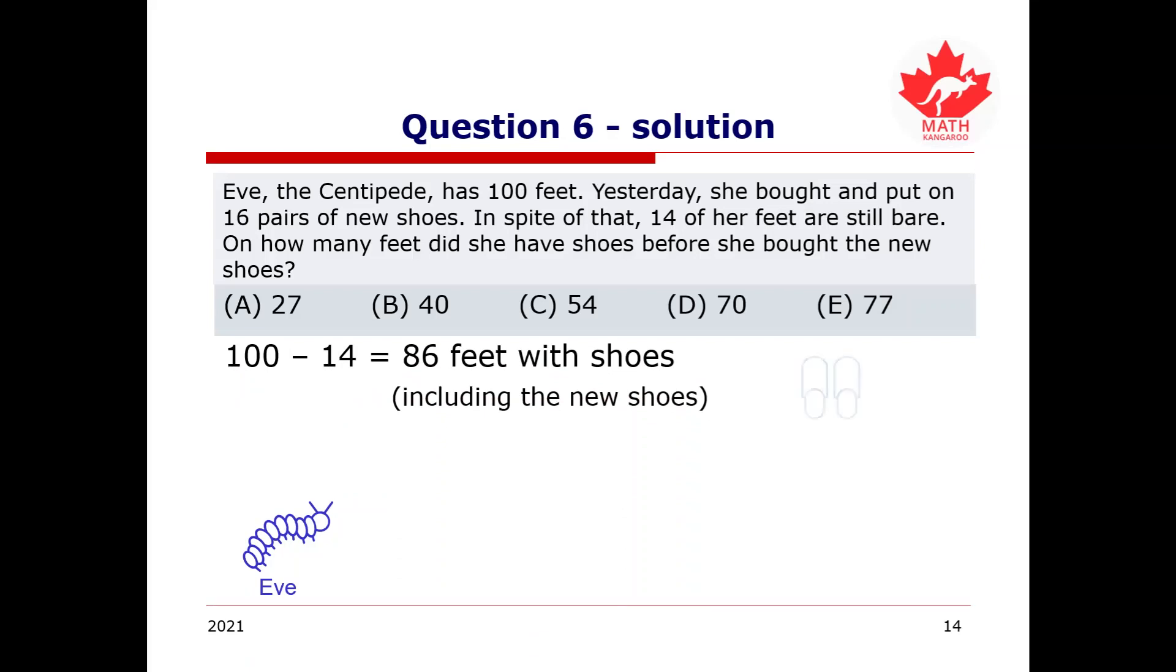And since one pair of shoes is for two feet, and two pairs of shoes are for four feet, we can then go 16 pairs of shoes must be 16 plus 16, giving us 32 feet. This means that Eve would have just put on 32 of her feet with some new shoes. Now, since we know that the total number of feet with shoes on is 86, and the number of new shoes, 32, Eve just put on, finding the difference between these two will give us the number of feet with shoes on before Eve got the new ones.